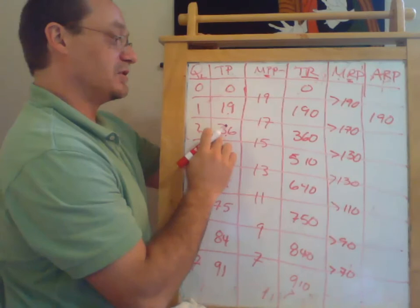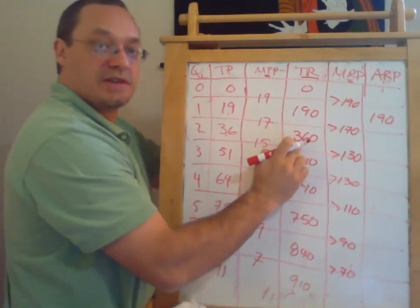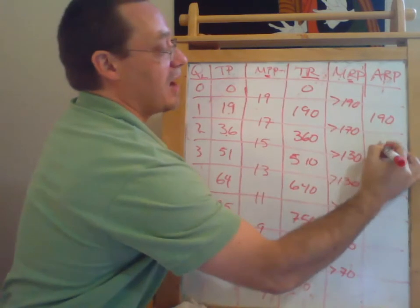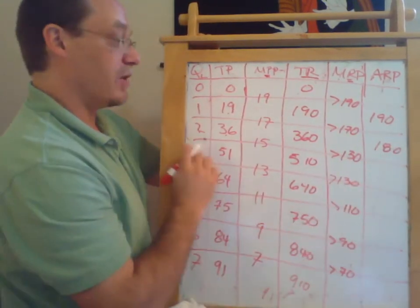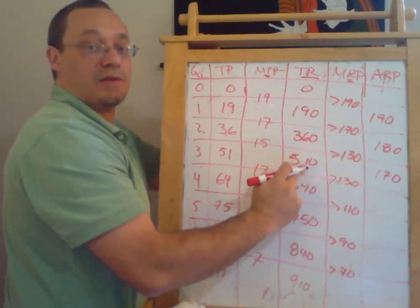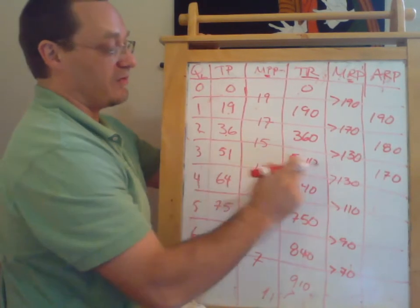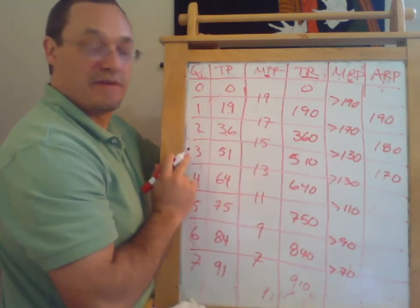If we have two workers, excuse me, two workers, and we have 360 of revenue, then we have 180 of revenue per worker, and so on and so forth down the line here. If we have three workers and $510 of total revenue, we divide 510 by the quantity of workers to get 170 revenue per worker.